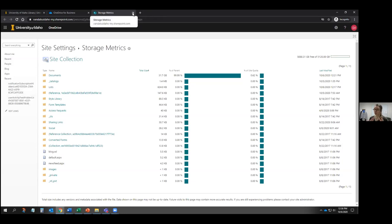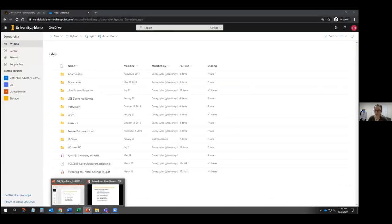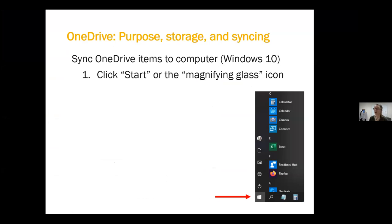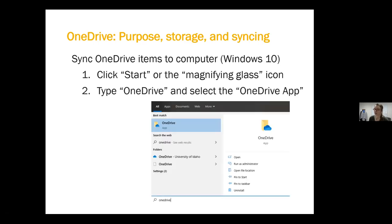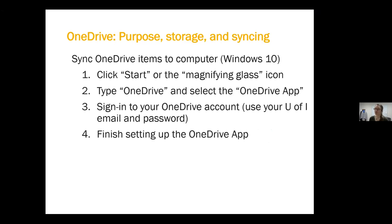You can use OneDrive through the web and access all your files through the browser-based version at onedrive.uidaho.edu. But you can also choose to sync all that information to your personal computer, whether it's a desktop or laptop. These instructions are for Windows 10 — Jessica is going to put a link in the chat with more information about syncing and setting up OneDrive, including how to do it on a Mac. For Windows 10, click the Start or magnifying glass icon, type OneDrive, and select the OneDrive app. Sign in with your U of I email and password, then finish setting up the app.